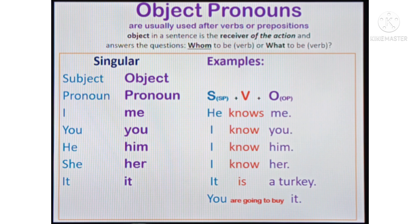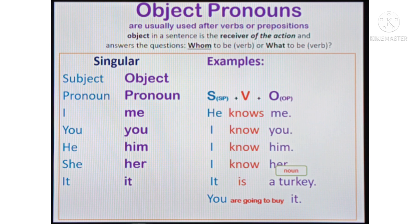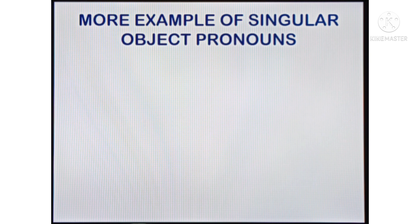So you see those are the examples. A turkey is a noun, and using the future 'be going to' form: 'You are going to buy it.' Here are more examples of singular object pronouns.